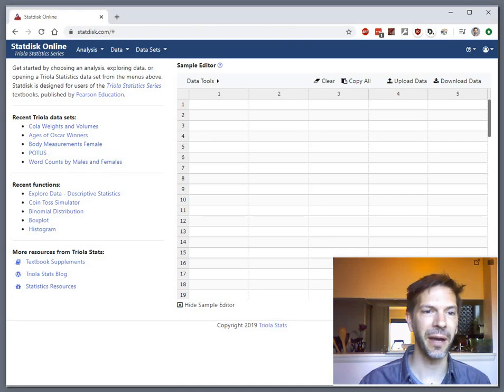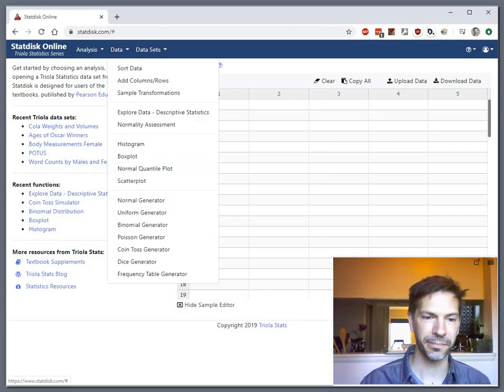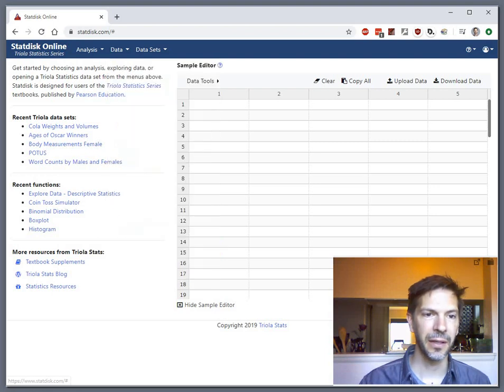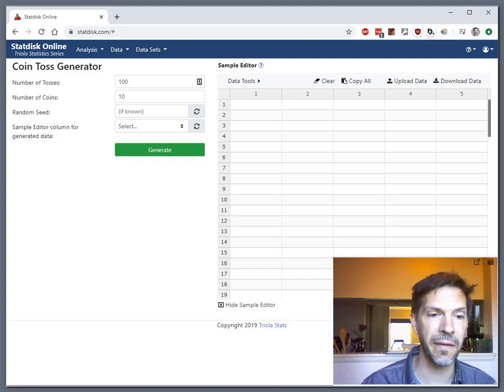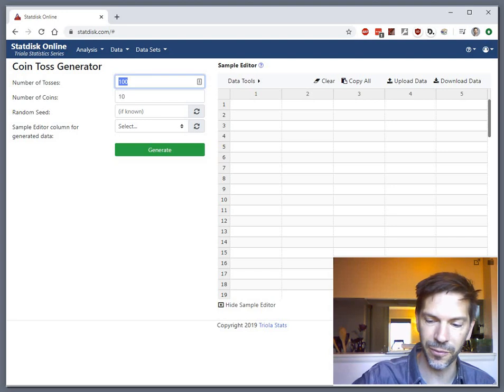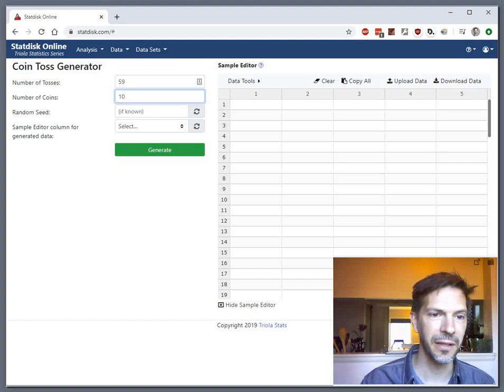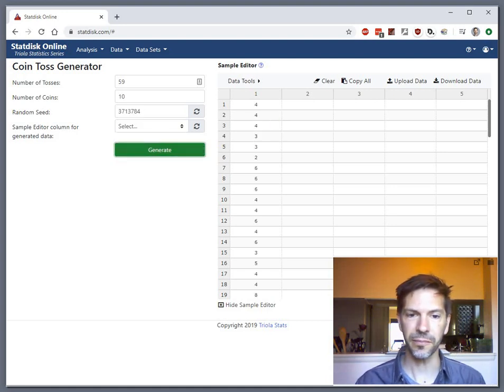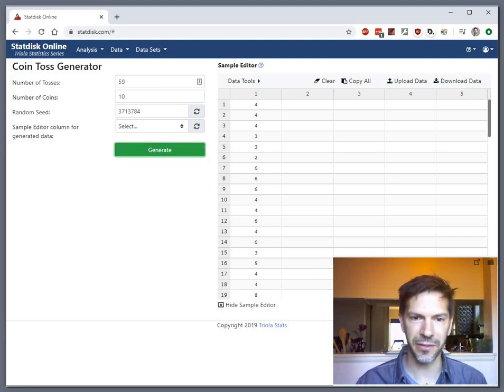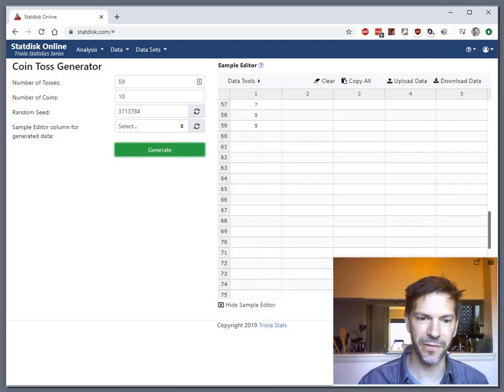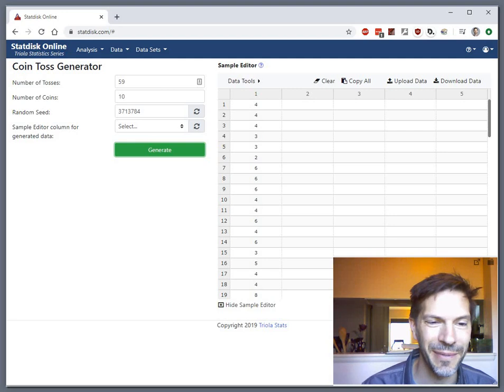The StatDisk app has a coin toss simulator. There's 57 of you in the class plus Christine and myself, so 59 people would have been flipping coins. So let's go 59 people, each tossing a coin ten times. I don't need to fill in a random seed, it'll pick one on its own. Let's put the results into column one and generate. There's 59 people all tossing a coin ten times and writing down their number of heads.